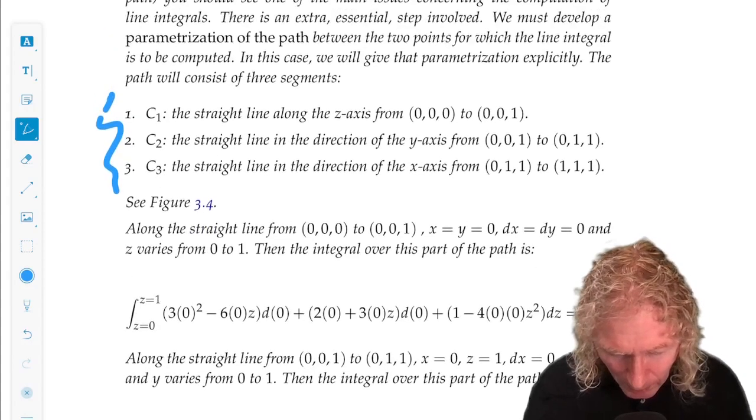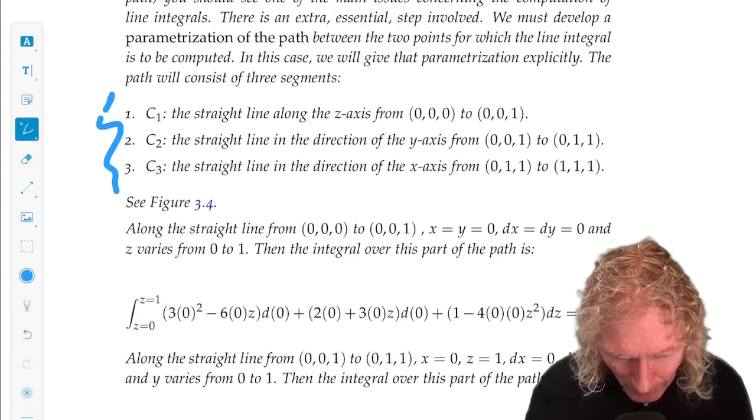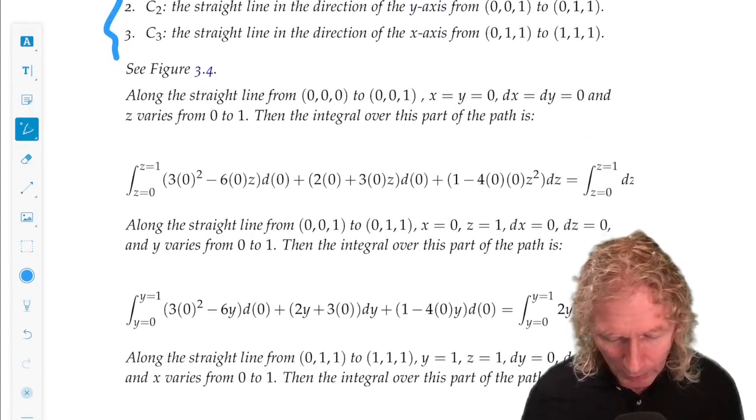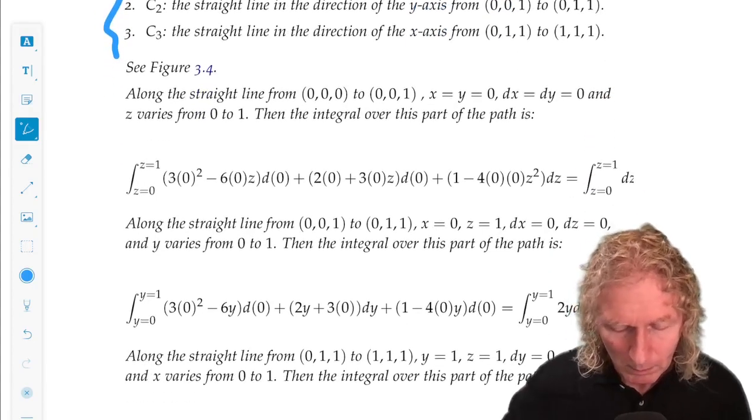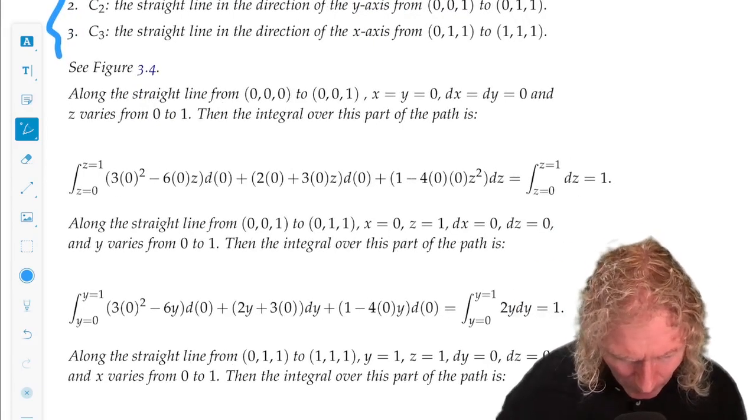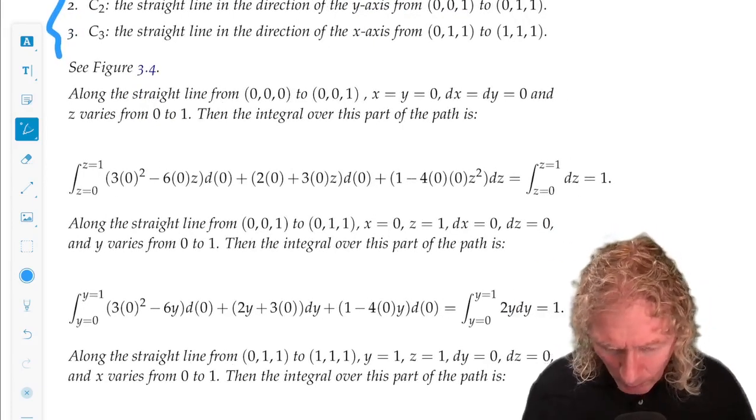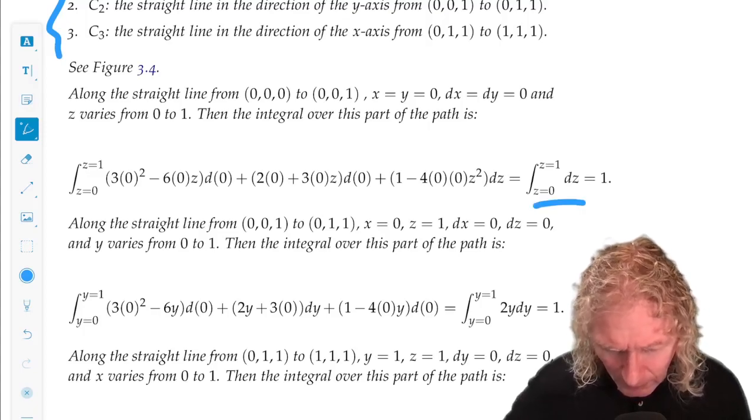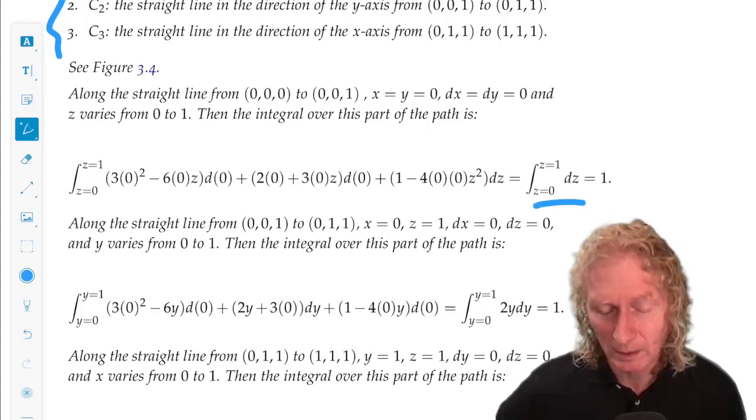C1, keep in mind that x and y are both 0. So we can plug 0s into the expression there. And so dx happens to be 0 also, dy happens to be 0. And we're just left with this contribution, dz, easily done.